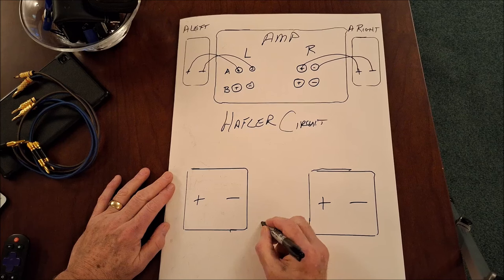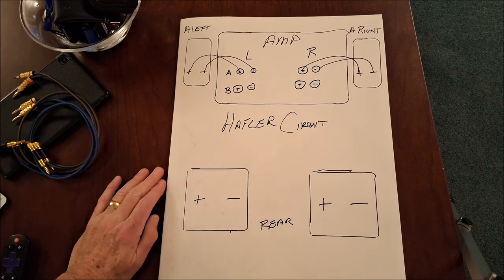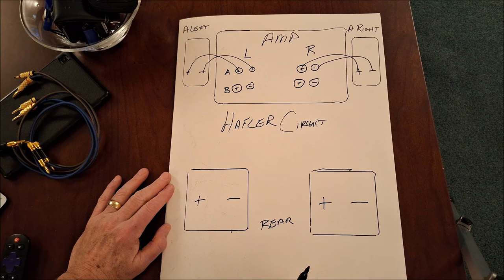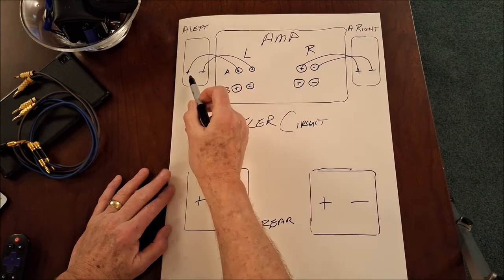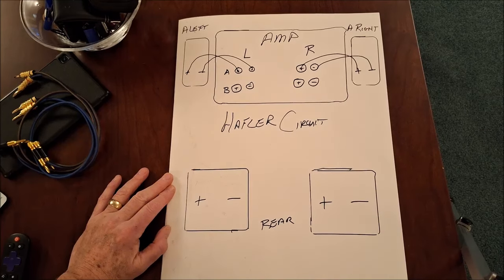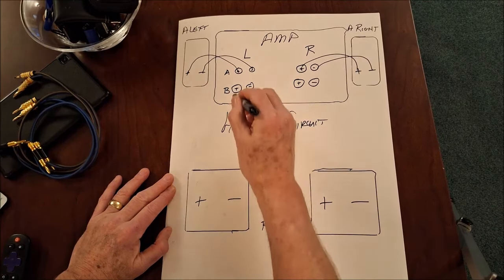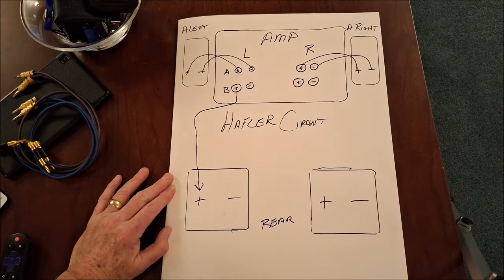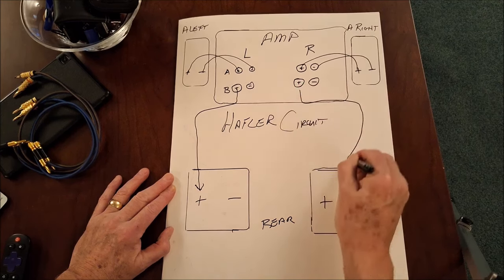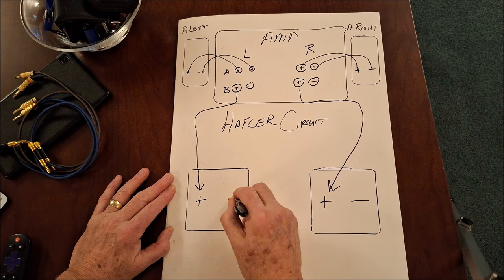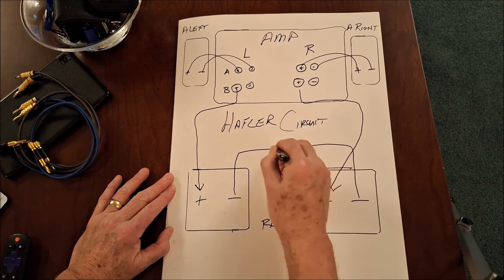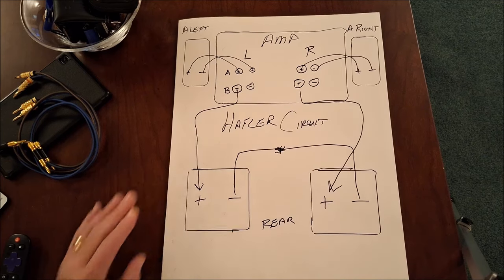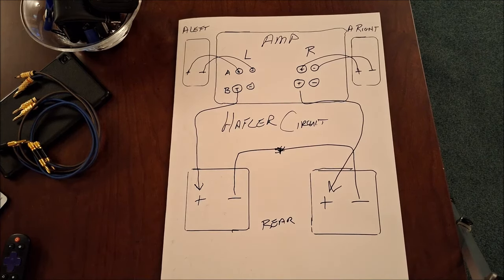The Hafler circuit is very simple. These are our rear speakers, and they can really be anything — they don't have to be big or full range, and they require no amplification. I have my main speakers wired up in a conventional manner. To complete the Hafler circuit, we're going to come from the positive of the amplifier to the positive of the speaker on both sides, and then we're simply going to connect the grounds together. That will give you an ambient retrieval circuit.